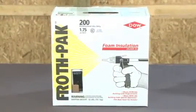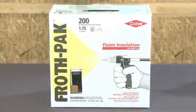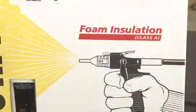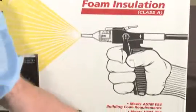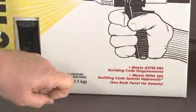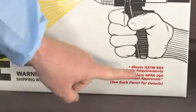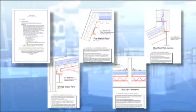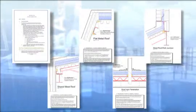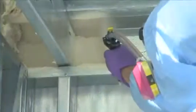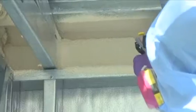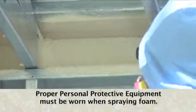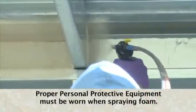To air seal these areas, we'll be using Dow FrothPak Class A Foam Insulation, which has an NFPA 286 approval for exposed use in this type of application. Dow has put together an air sealing package, including guide specifications and more than 28 design details to help designers address the issue. I will now demonstrate FrothPak, but it's important to remember to wear the proper PPE.